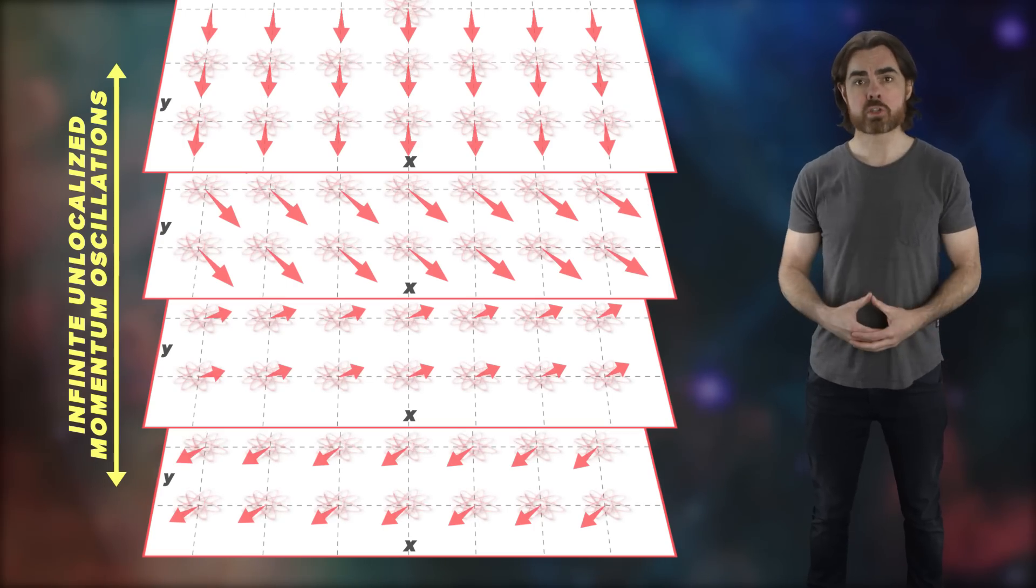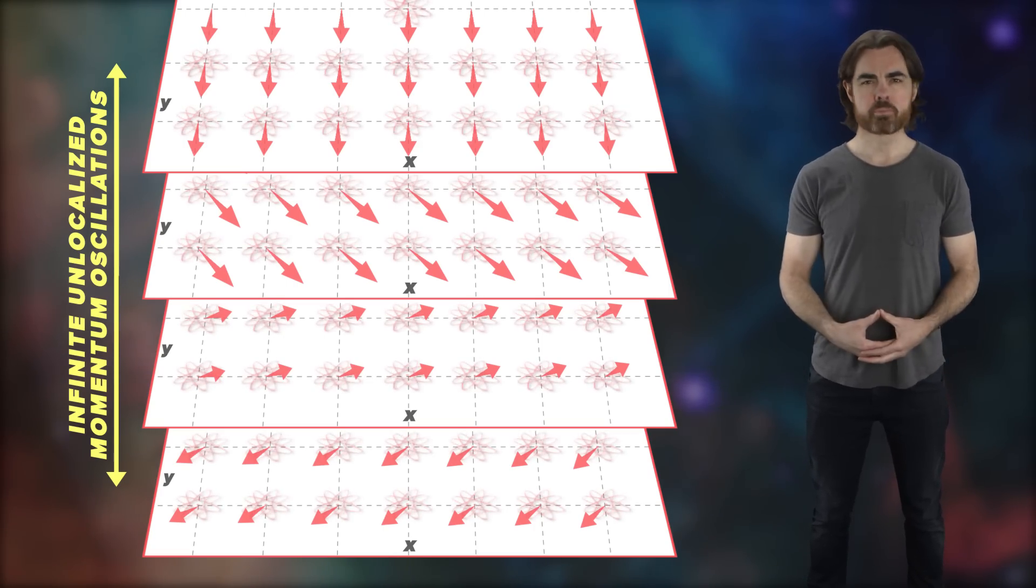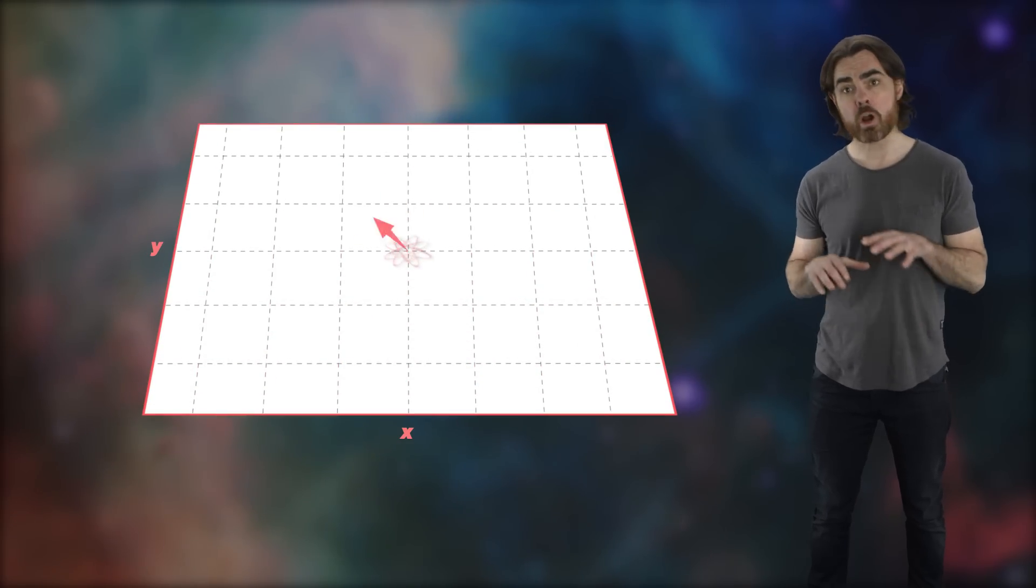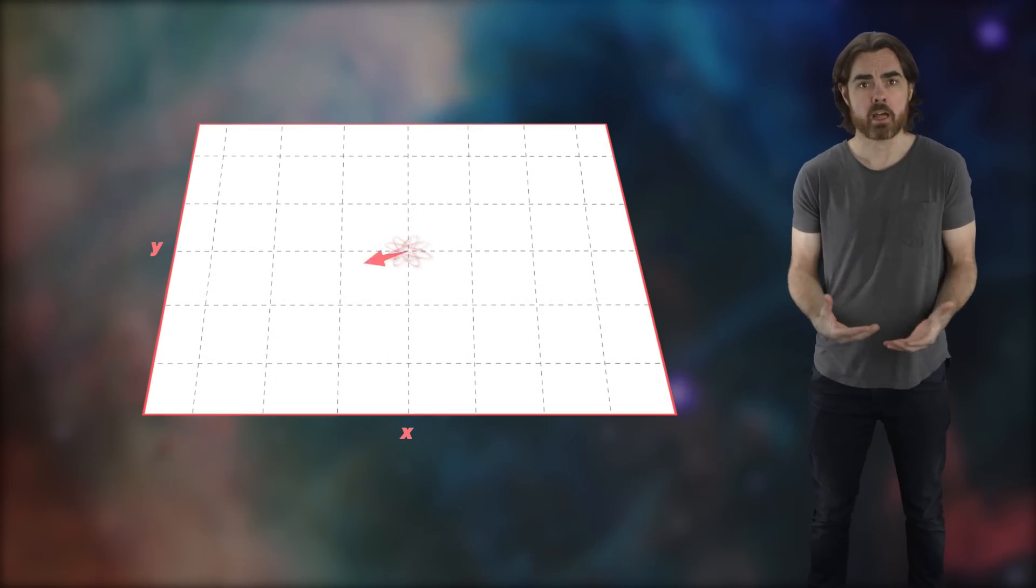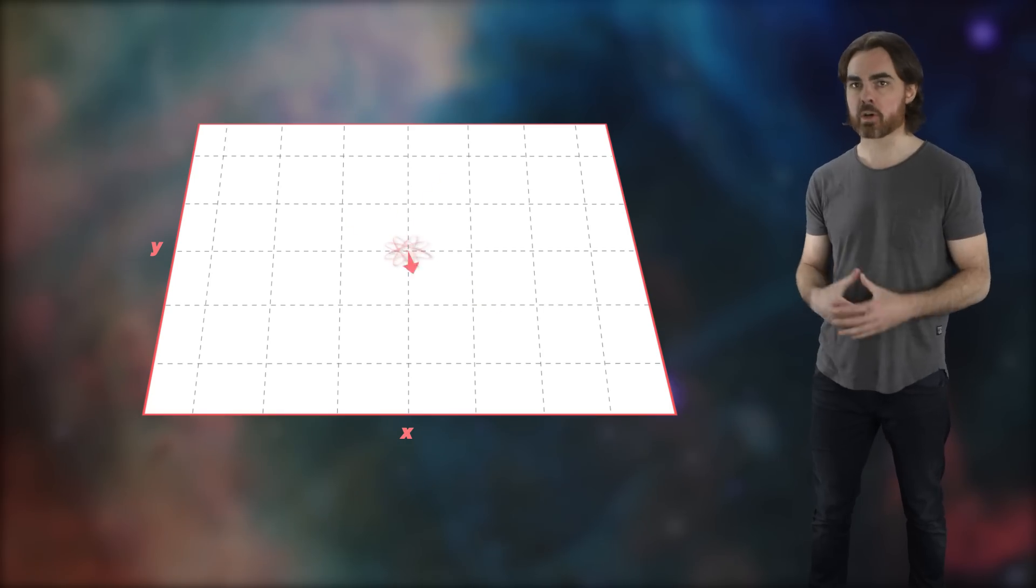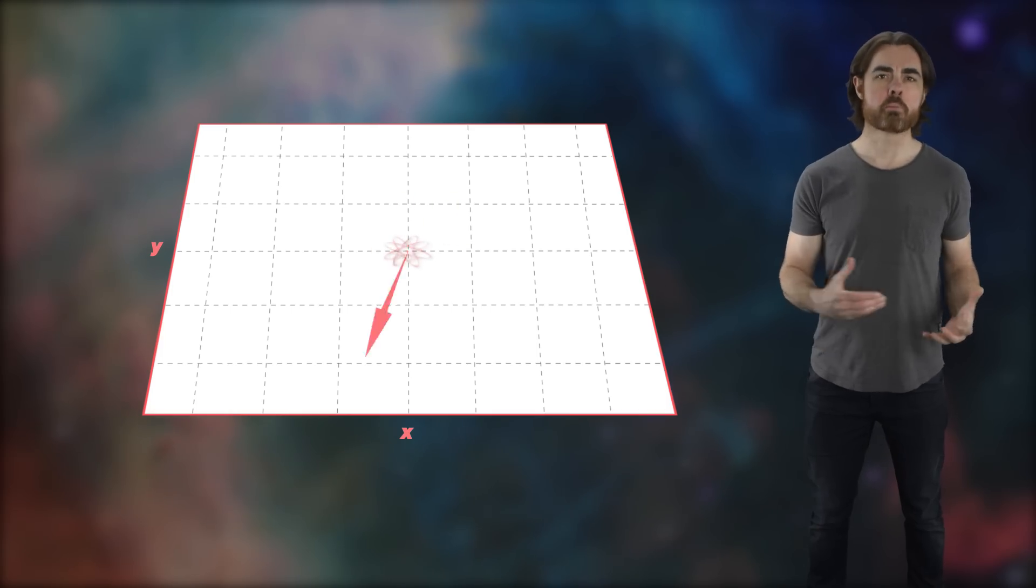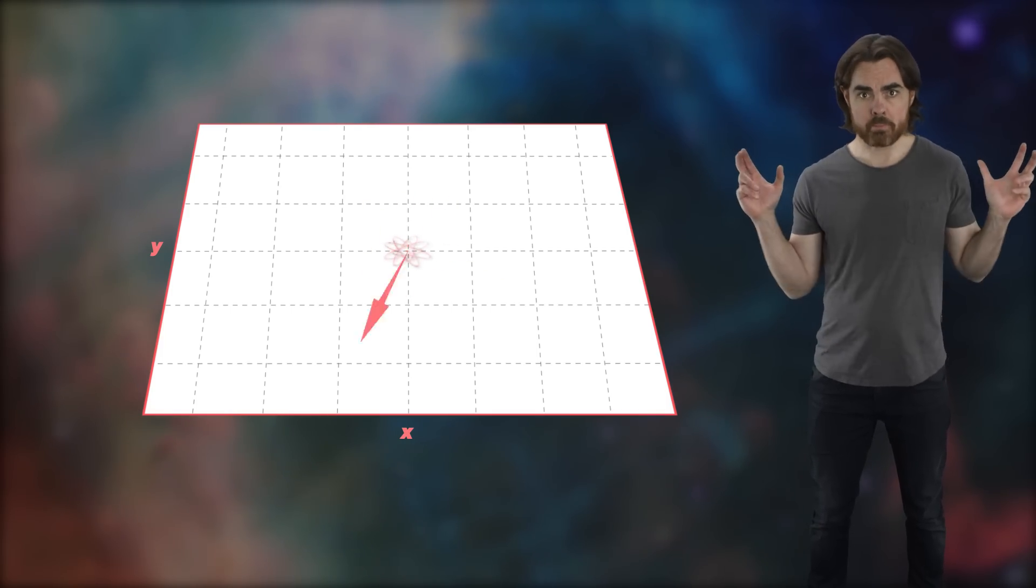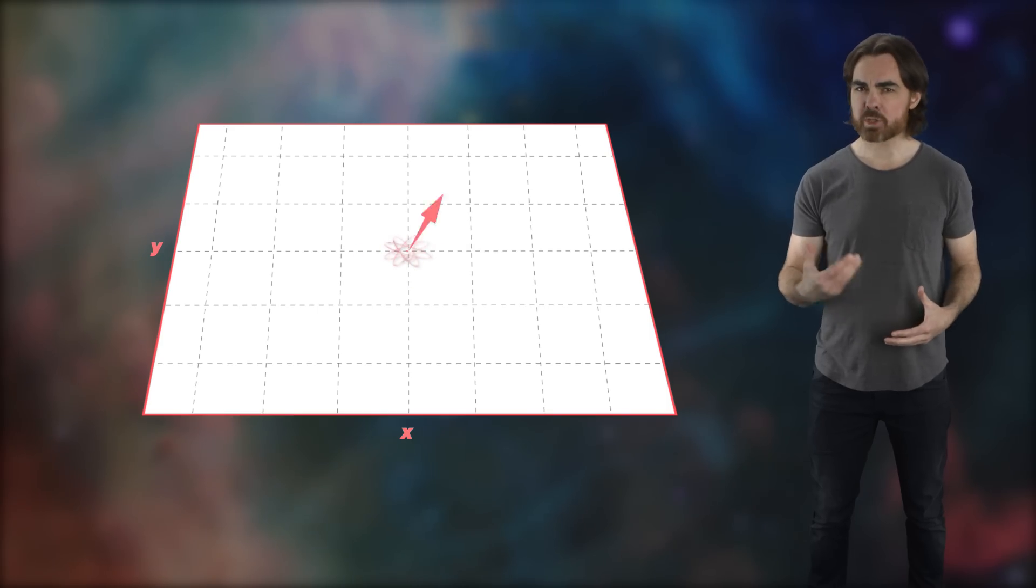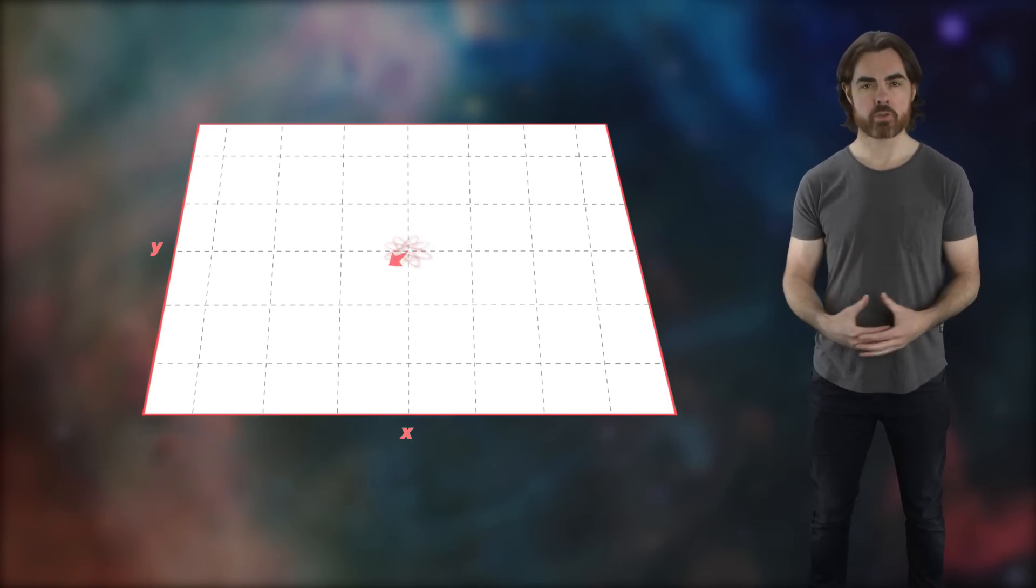Bizarrely, in momentum space, that single perfectly localized position oscillation can also be described as an infinite number of unlocalized momentum oscillations. Now, each one of these momentum modes oscillations exists at all spatial points in the universe. If we add these momentum oscillations together with the right weightings, they cancel out everywhere, except at the spatial location of the original particle. The superposition of infinite universe-sized momentum oscillators, momentum particles, can represent a single spatial oscillator, one particle at one point in the universe.